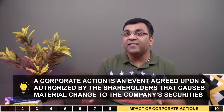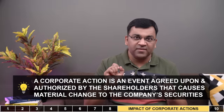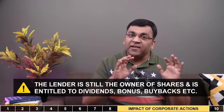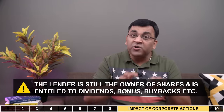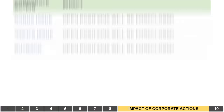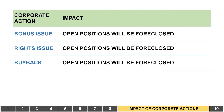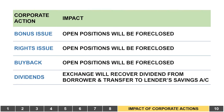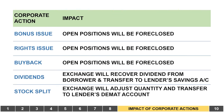Corporate action refers to anything that happens to your shares other than a change in price. As a long-term investor who has lent shares, you are still the owner and entitled to dividends, bonuses, and buybacks. In the case of bonus issue, rights issue, and buyback, open SLB positions will be foreclosed and the exchange will handle the return of shares and pro-rata application of lending fees. For dividends, the exchange recovers the money from the borrower and transfers it to the lender's savings account. When a stock split happens, the exchange adjusts the quantity and transfers shares to the lender's DMAT account.